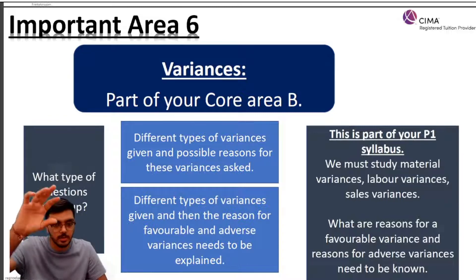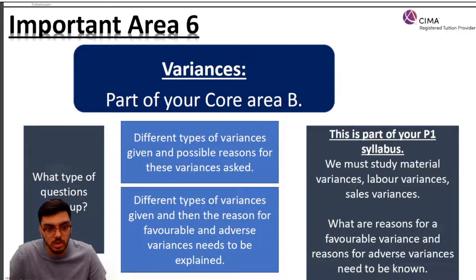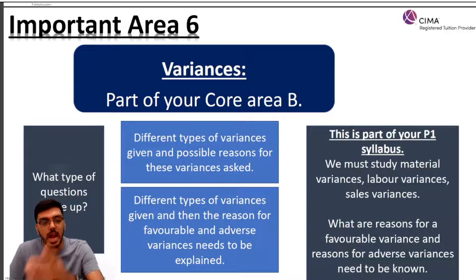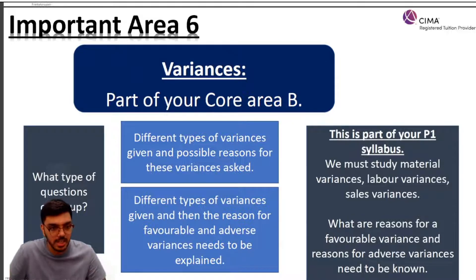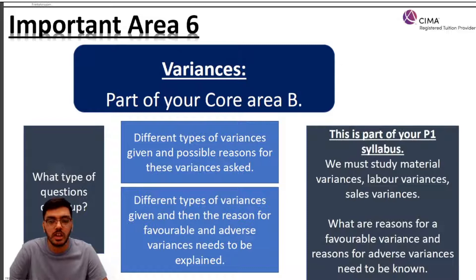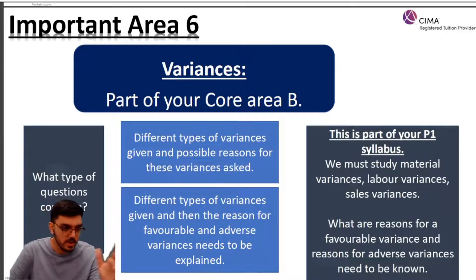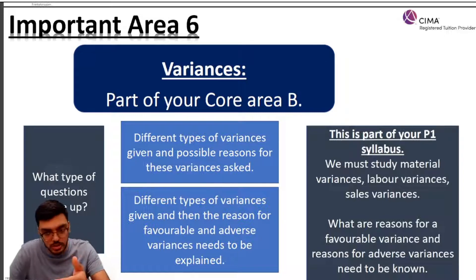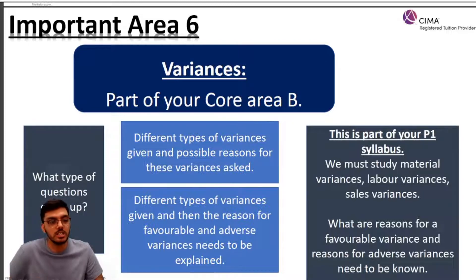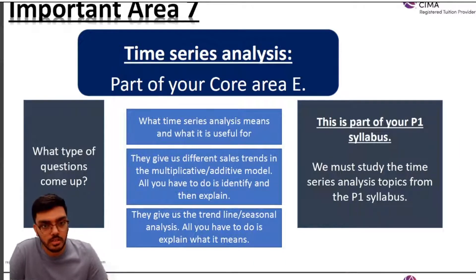For example: material price variance occurs because of these reasons; material efficiency variance, material usage variance, labor efficiency variance — you should know two or three reasons for each, whether adverse or favorable. If you have the theory ready, you'll be able to apply it quickly. You must clearly know material price variance, material usage variance, labor rate variance, labor efficiency variance, sales price variance, and sales volume variance, including reasons for each adverse or favorable result.